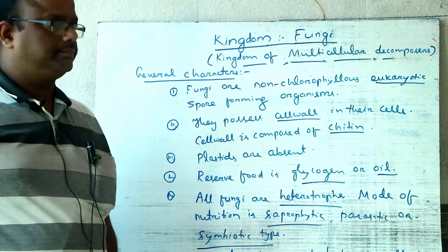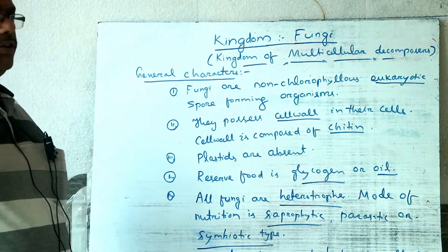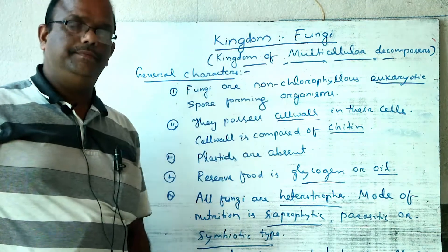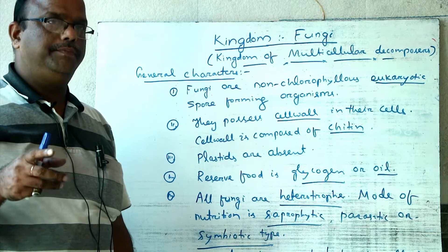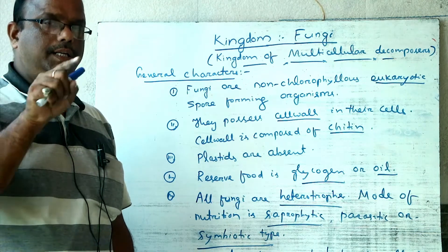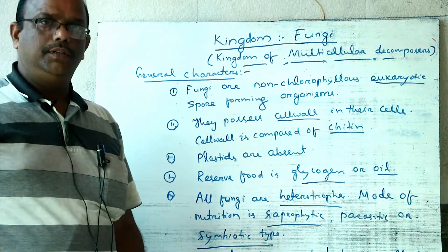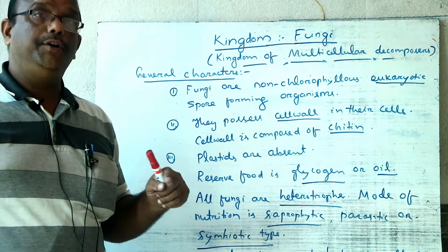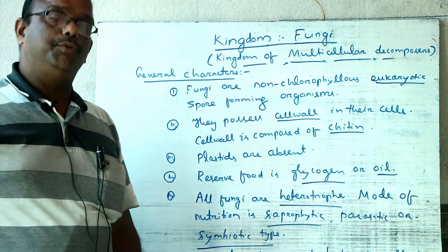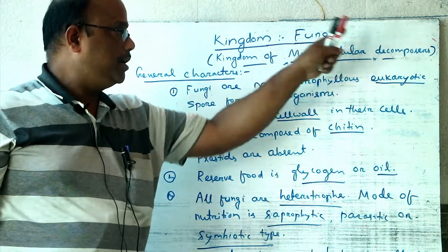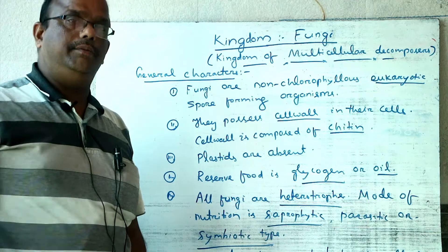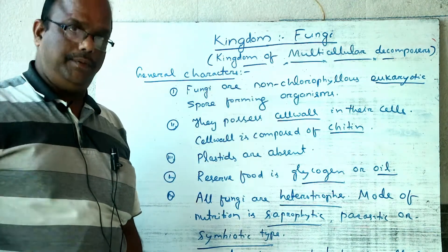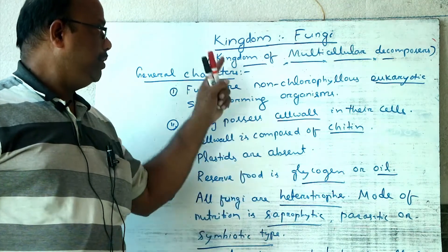Good morning. Let us discuss the next kingdom of the five kingdom classification, that is Kingdom Fungi. R.H. Whittaker classified living organisms into five different kingdoms: Kingdom Monera, Kingdom Protista, Kingdom Fungi, Kingdom Plantae, and Animalia. In today's class, I will discuss about Kingdom Fungi.